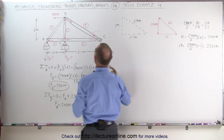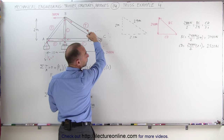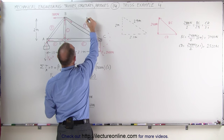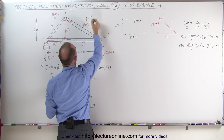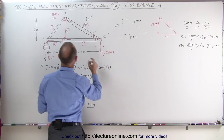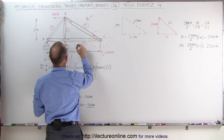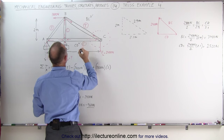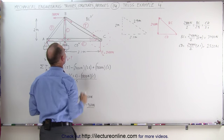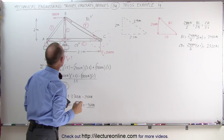Coming back to the diagram: from B to C we have 3,480 newtons, and from C to D we have 2,520 newtons. We now have the magnitude of the forces on those two members.